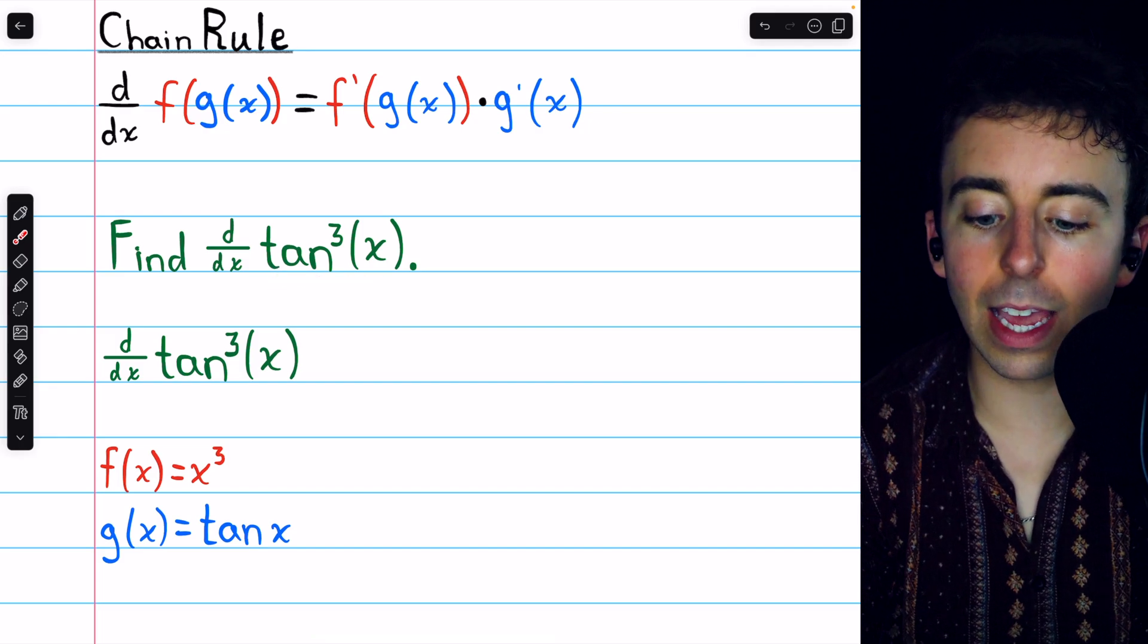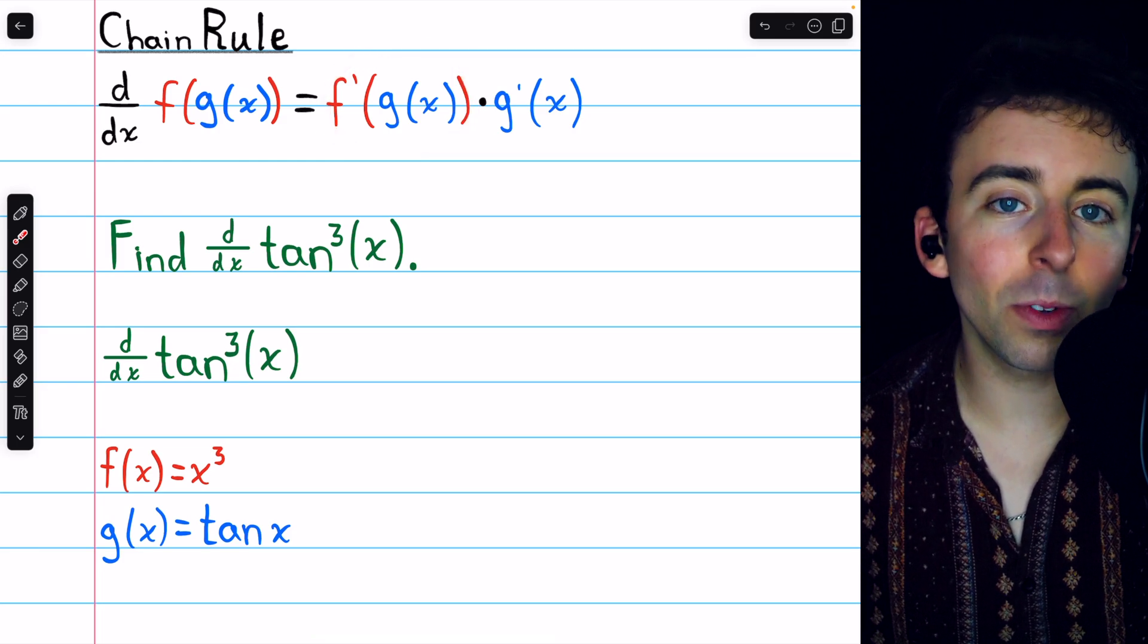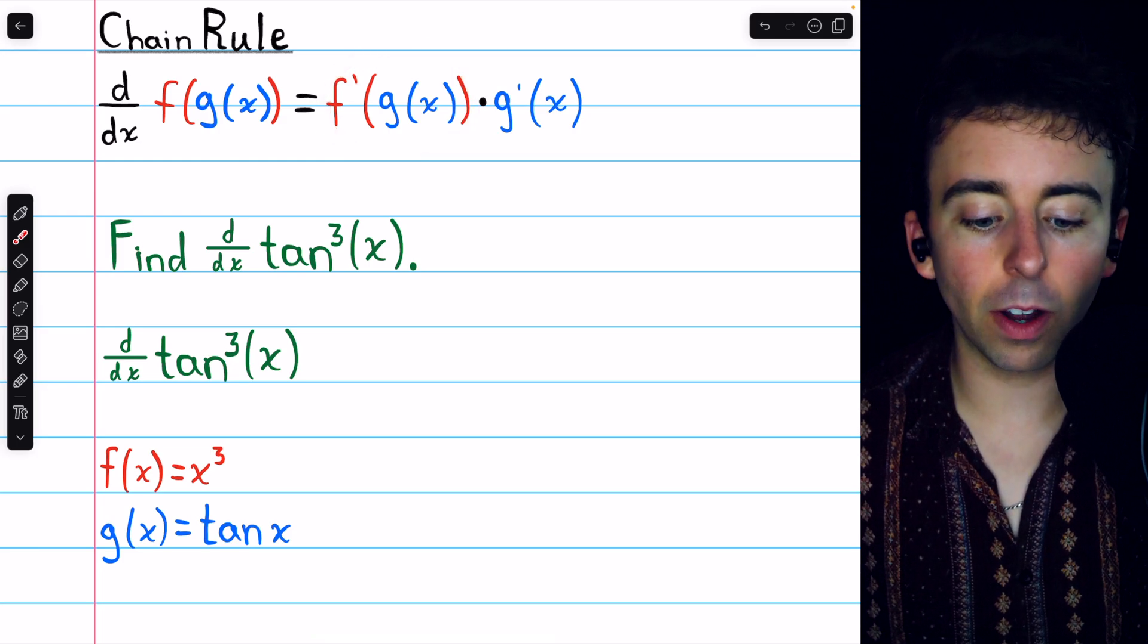So applying the chain rule, we begin with f prime of g. That's the derivative of the outside layer, leaving the inside function unchanged.